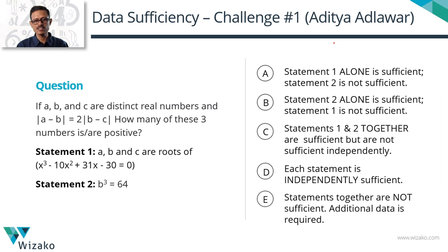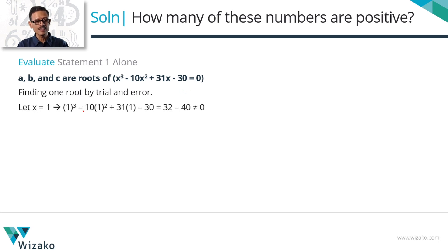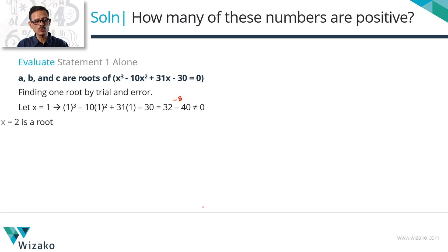The fourth set of statements is by Aditya Adilavar. Statement 1: A, B, and C are roots of x³ − 10x² + 31x − 30 = 0. Statement 2: B³ = 64. For Statement 1, let's find the roots. Testing x = 1 gives −8, not zero. Testing x = 2 gives zero, so x = 2 is a root. Using synthetic division with coefficients 1, −10, 31, −30 and root 2 gives the quotient x² − 8x + 15.